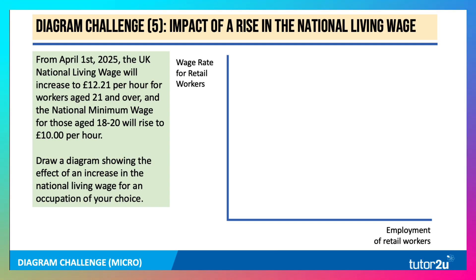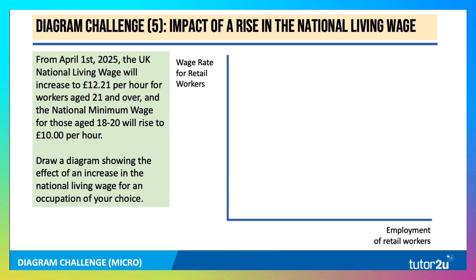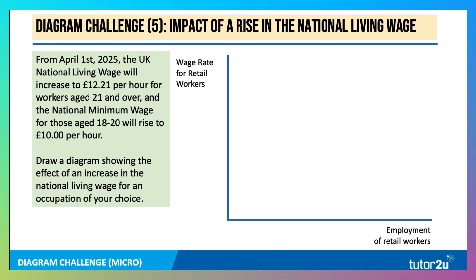Here's the fifth and final diagram challenge: the impact of an increase in the minimum wage. From April 1st the UK National Living Wage will rise to £12.21 per hour for adult workers and £10 an hour for those aged 18 to 20. Draw a diagram showing the effect of an increase in the National Living Wage for an occupation of your choice — I've chosen retail workers. Press pause, have a go, then press play to walk through the answer.